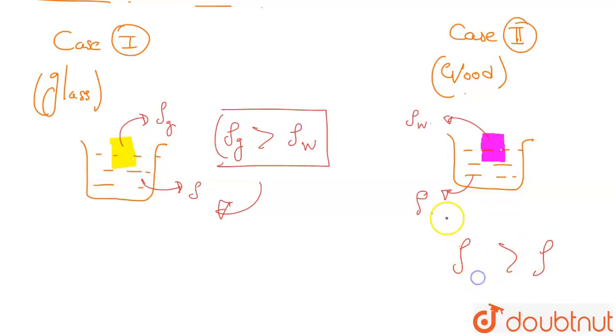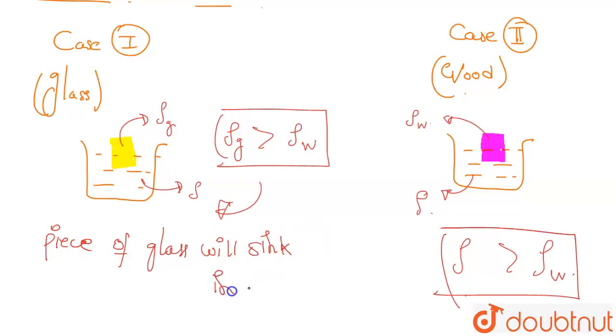So we are denoting the density of water. Because the density of glass is more than water, simply the piece of glass will sink in water.